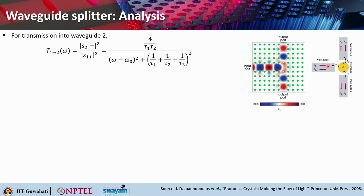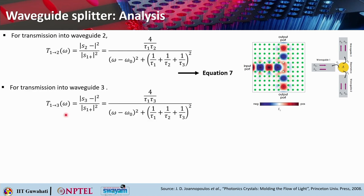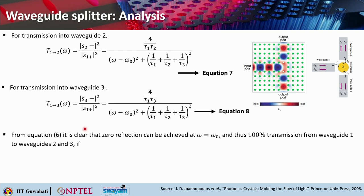The transmission from waveguide 1 to 2 is T₁₂(ω) = |S₂₋|²/|S₁₊|², with the formula being 4/(τ₁·τ₂) divided by (ω − ω₀)² plus (1/τ₁ + 1/τ₂ + 1/τ₃)². Transmission peaks when ω equals ω₀. For transmission into waveguide 3, the same equation applies, replacing τ₂ with τ₃ in the numerator. With this, you can estimate the transmission happening to waveguide port 2 and port 3.